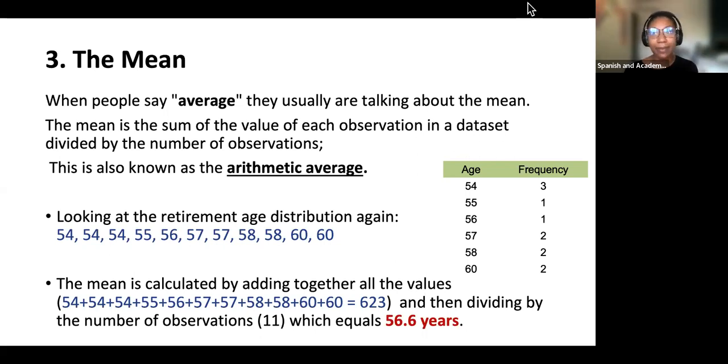Here we are looking at the retirement distribution again. We have our set numbers. We'll arrange them in order. We'll divide it by the number of observations that we have, which is 11, and we'll see that it equals 56.6. This is a bit more advanced example because I wanted to show you the point of calculating the average, what we mean by the average. But remember, for your exam, you would not need to calculate it, although you would be able to find the average if they asked you pretty simply.